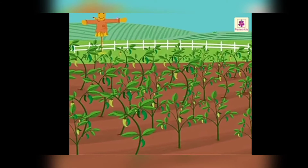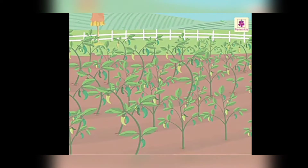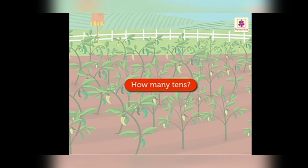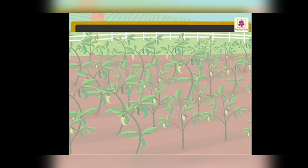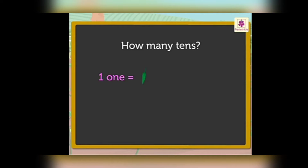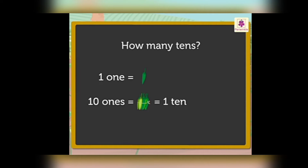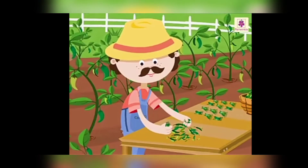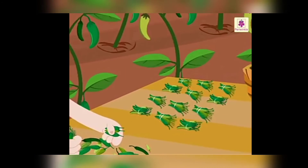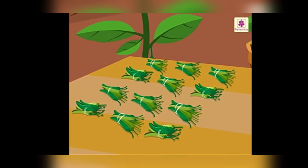Look at the farm of green chillies. Today let's learn how many tens with these green chillies. We know that one one means one chilli. Hence ten ones mean ten chillies. So when we group ten chillies together we get one ten. Look, the farmer has made groups of ten chillies.